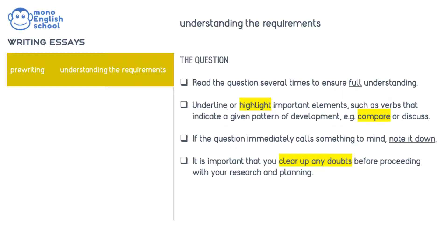Underline and highlight important elements such as verbs that indicate a given pattern of development. Verbs such as 'compare' and 'discuss' indicate different essay requirements in terms of the essay's pattern of development. A comparison essay would require you to write about the similarities between two or more items, whereas a discussion is a more open type of assignment. We will discuss patterns of development in more detail when we move on to discuss the organisation of your essay.